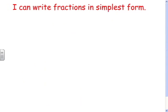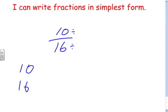Let's take a look at another example: 10 sixteenths. We need to find something we can divide both numbers by, so let's find the factors of 10. We have 1 times 10 and 2 times 5. Three times anything? No. So the factors of 10 are 1, 2, 5, and 10.